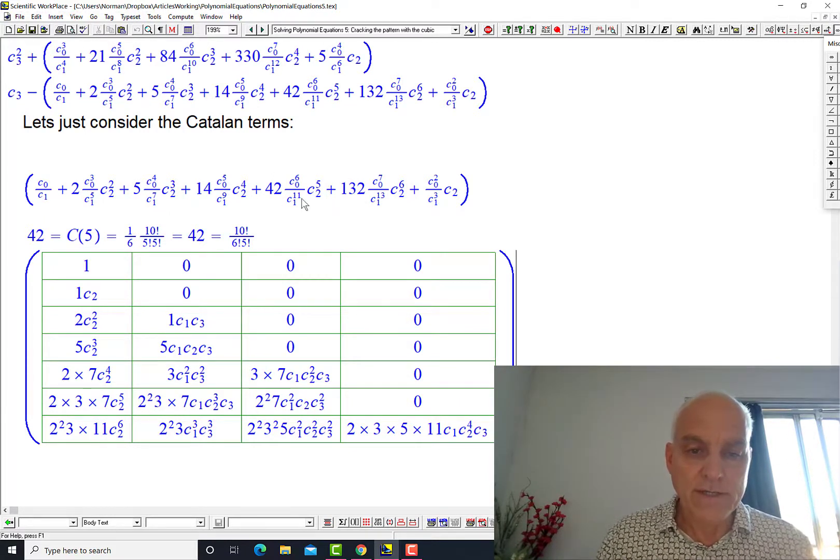So we're looking at this term here. And we're trying to say, how could we predict this 42 just from the nature of things here? Well, there's a c0 to the 6 on top. There's a c2 to the 5th. There's a c1 to the 11 on the bottom. That's interesting because there's a 6 factorial on the bottom here. There's a 5 factorial on the bottom corresponding to these two powers here. And there's a 10 factorial on the top instead of, well, there's an 11 as a power of c1 in the denominator.